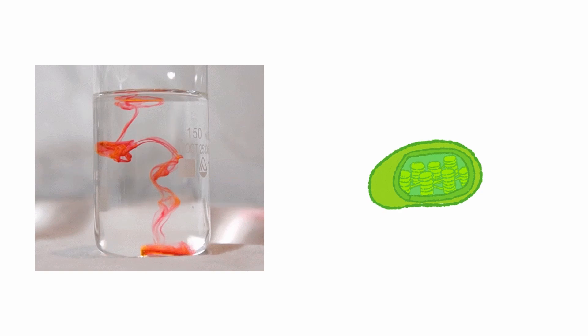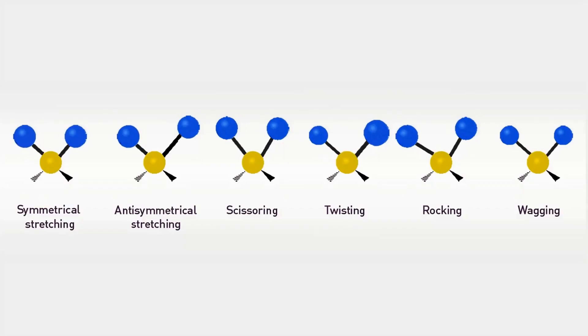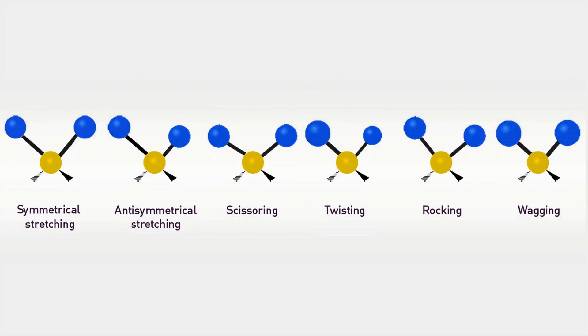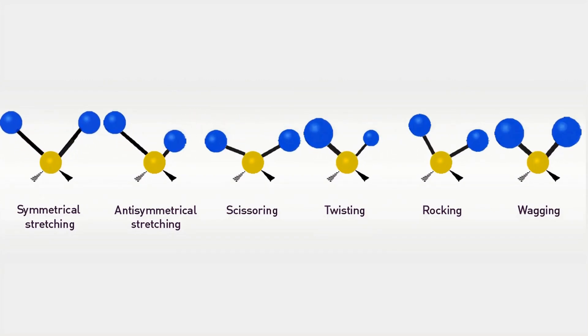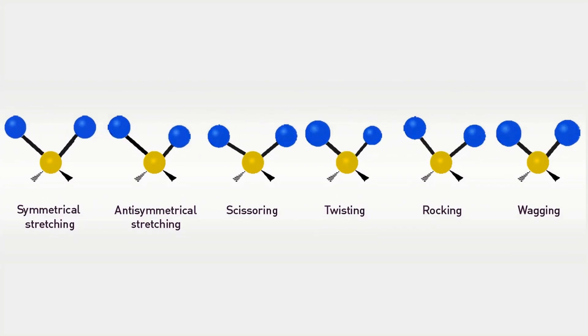Next, there's infrared spectroscopy, commonly known as IR. This method provides insights into molecular vibrations, allowing identification of functional groups in organic compounds. Ever wondered how scientists determine what makes up a perfume? IR holds the answer.